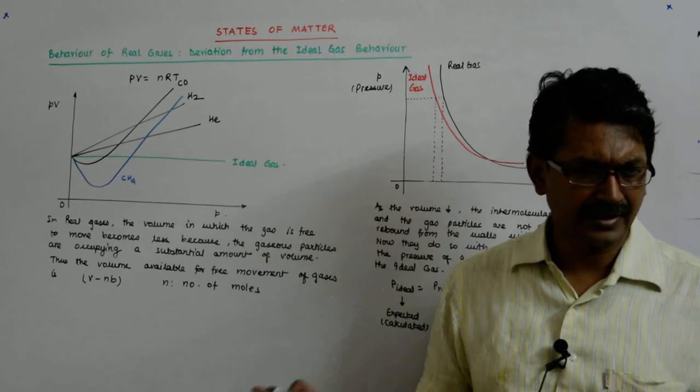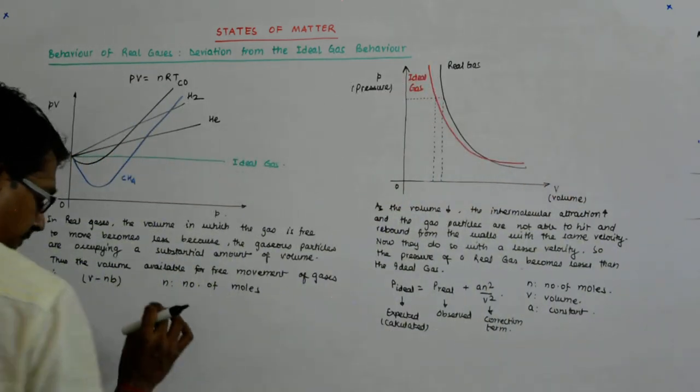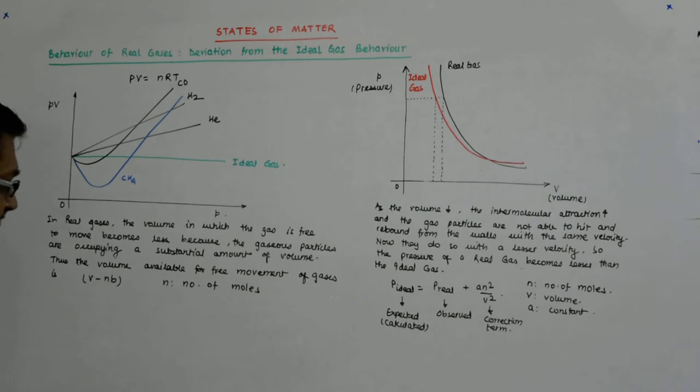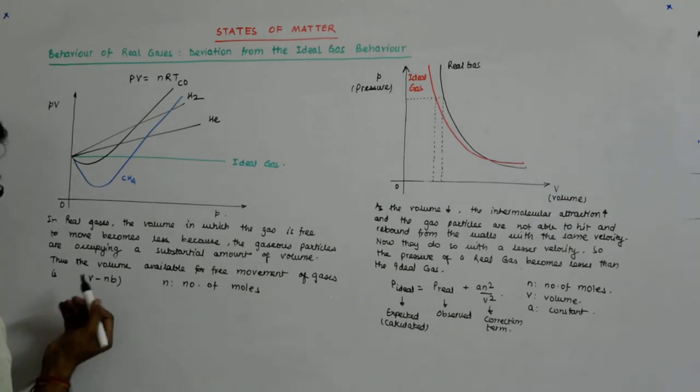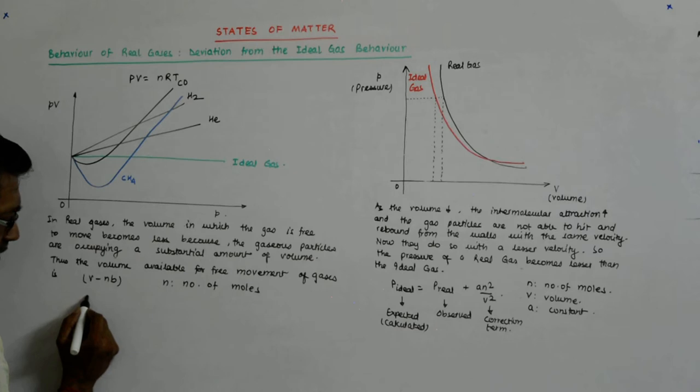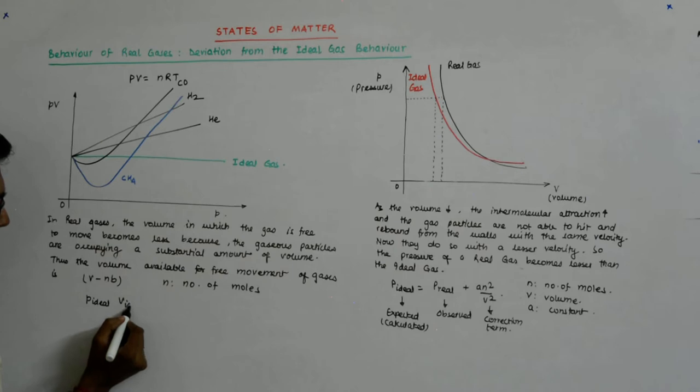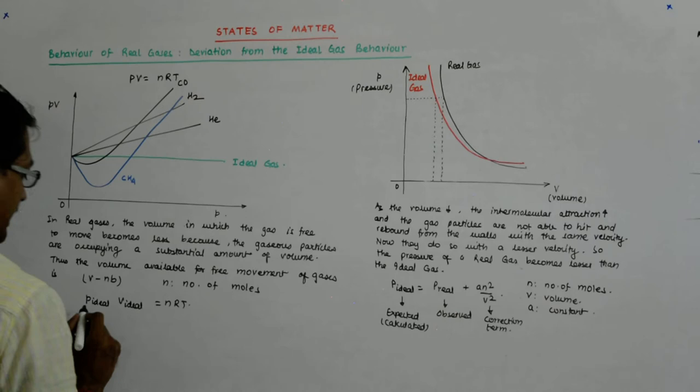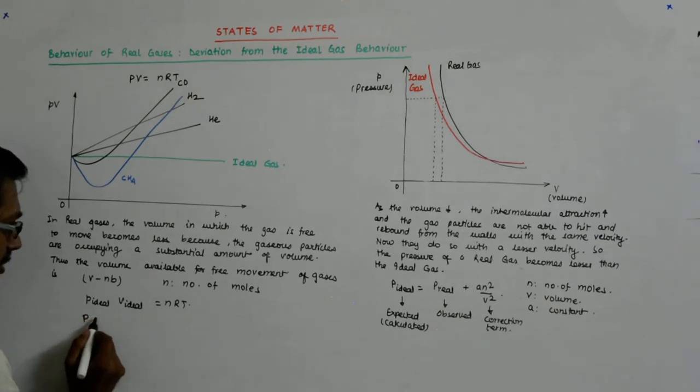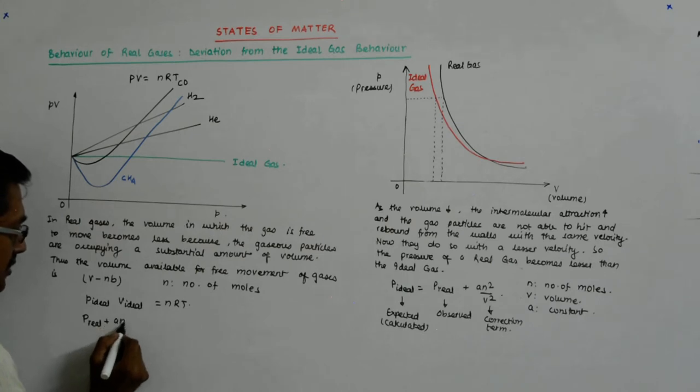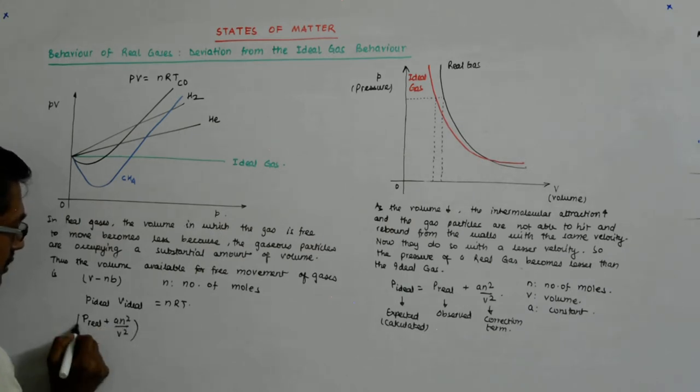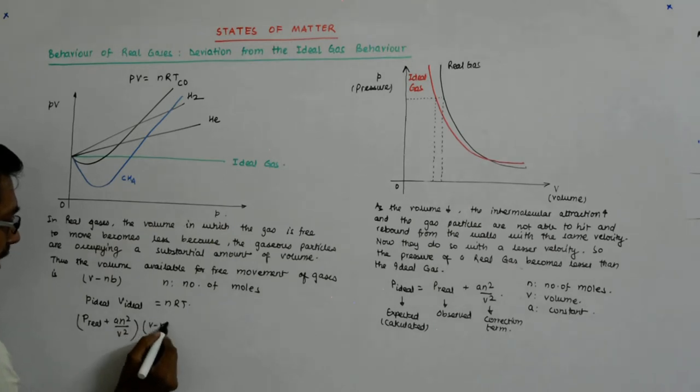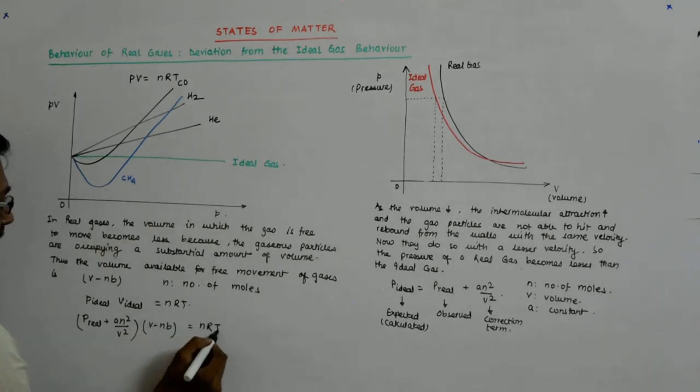So what happens to our ideal V equation? Ideal V is equal to nRT. It becomes P real plus A N squared upon V squared into V minus NB is equal to nRT.